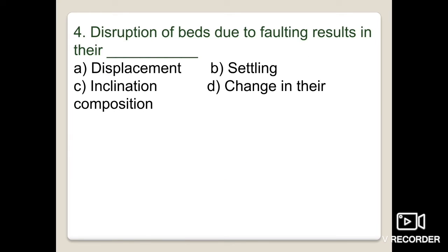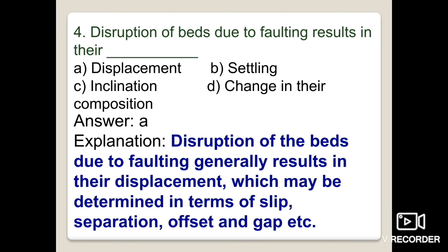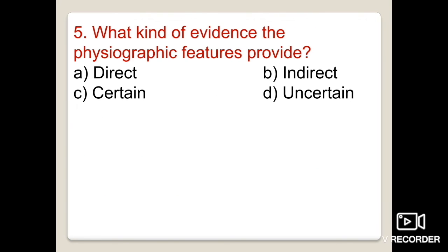The fourth question: disruption of beds due to faulting results in their displacement, settling, inclination, or change in composition? The answer is displacement. Disruption of beds due to faulting generally results in their displacement, which may be determined in terms of slip, separation, offset, and gapping.